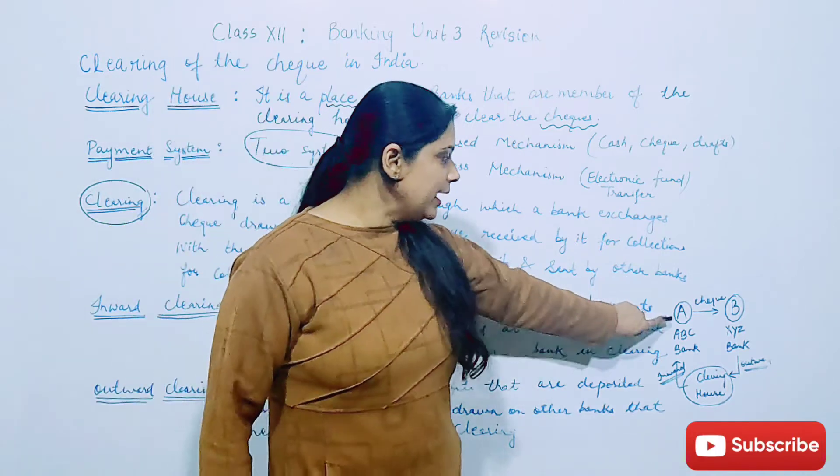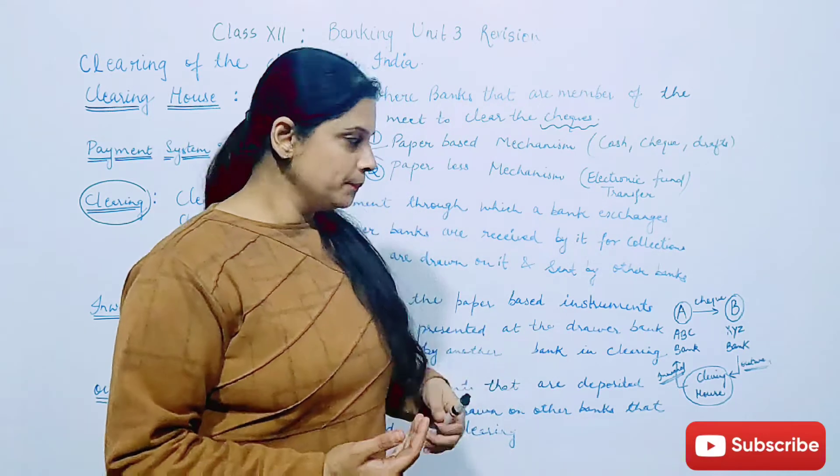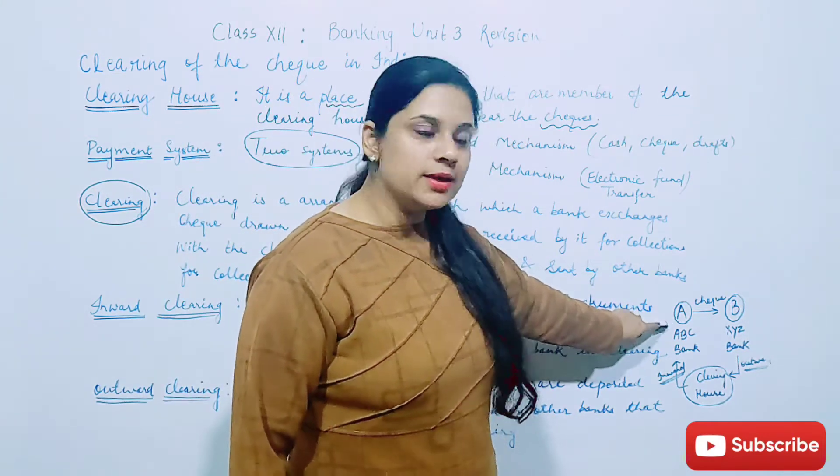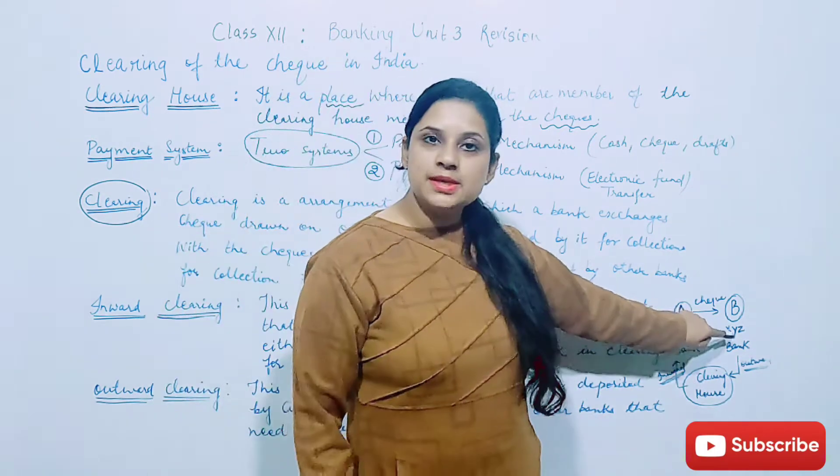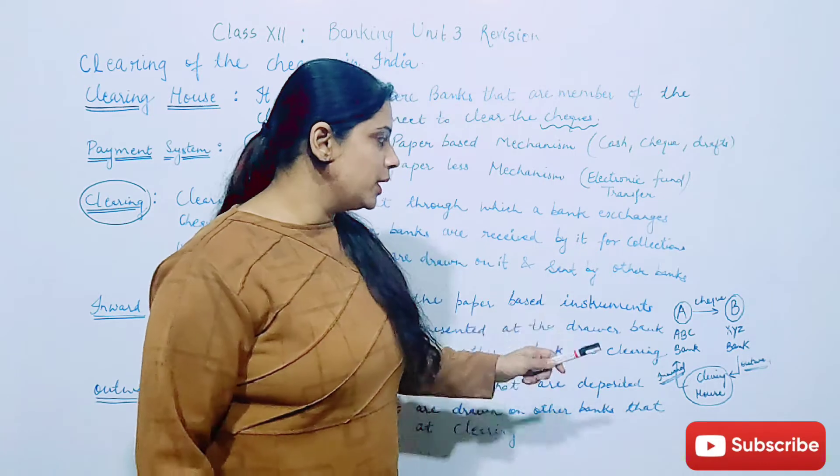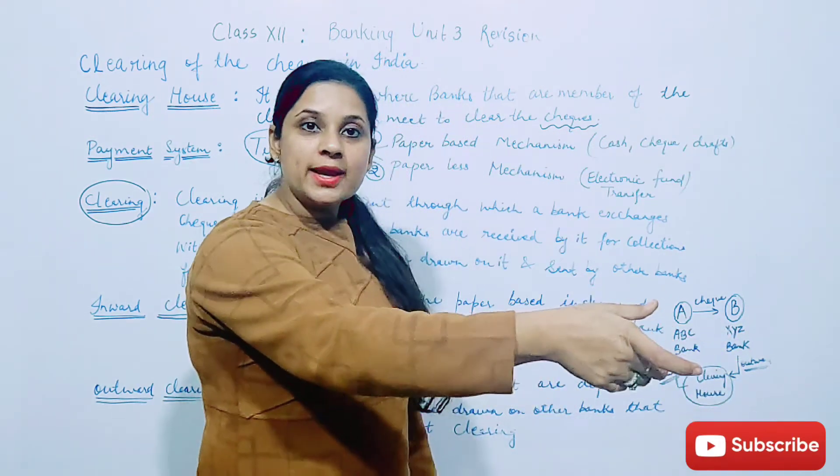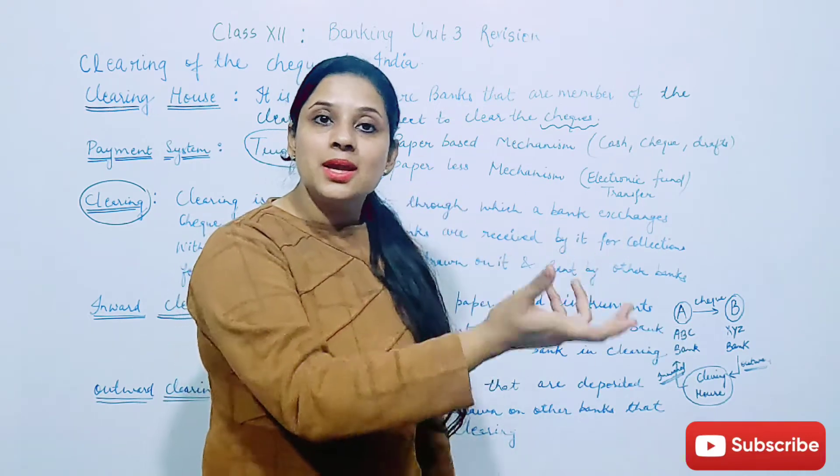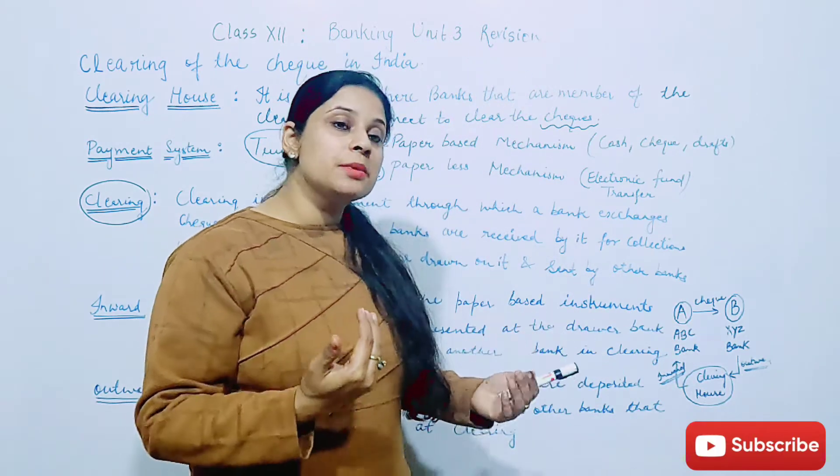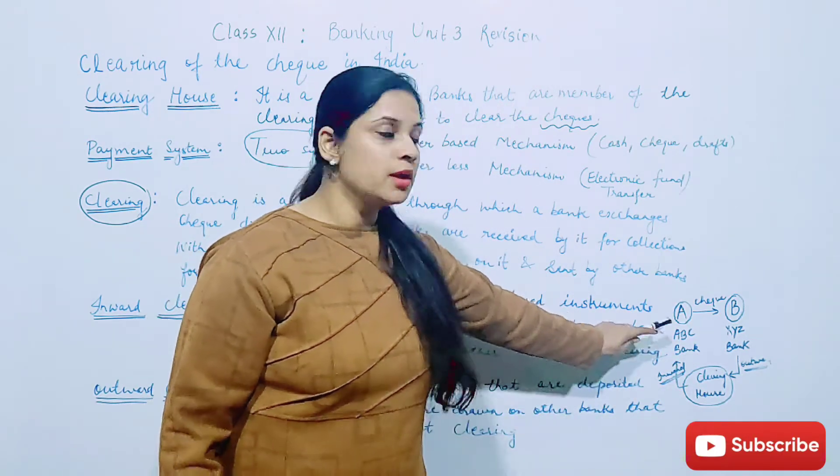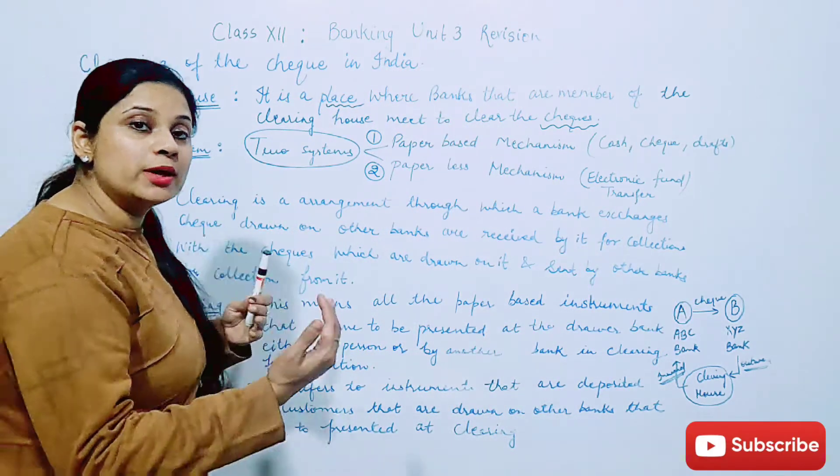For example, agar A party hai aur B party hai, donon ke beech mein goods ki dealing hui hai. Then ABC bank ka check kaat ke diya A party ne B ko. Aur B ka bank XYZ bank hai. Now when ABC bank ka check XYZ bank mein jayega, woh basically payment ki clearing ke liye ja raha hai. XYZ ko payment actually ABC bank se milni hai. Toh XYZ bank clearing house ka help lega for clearing of the payment.